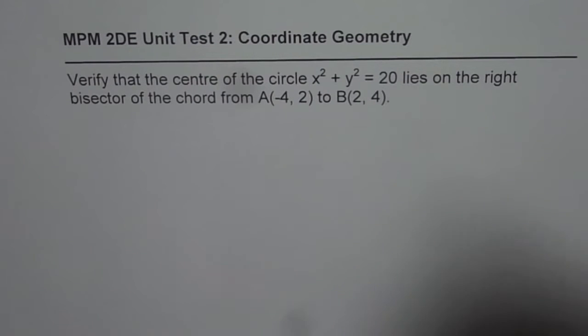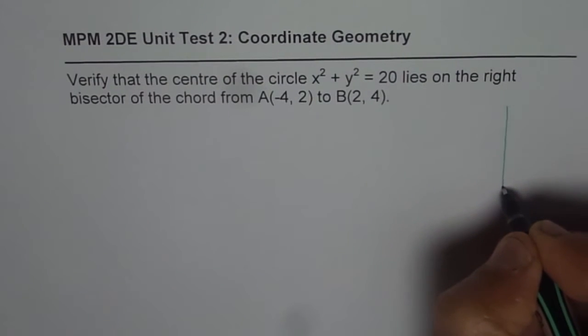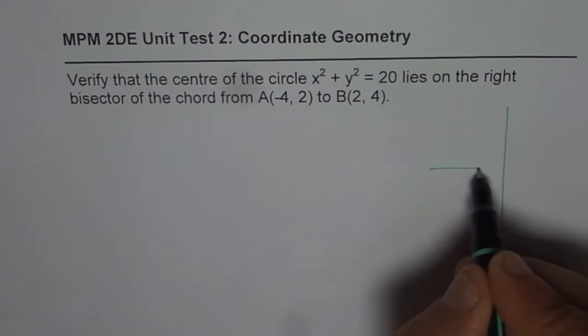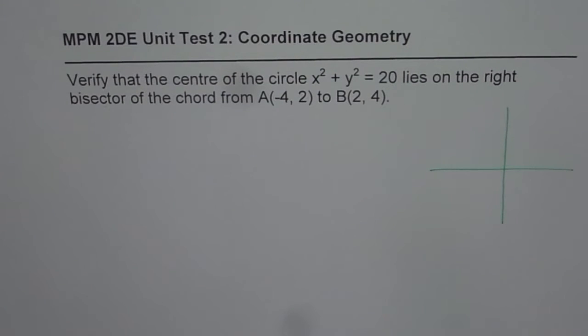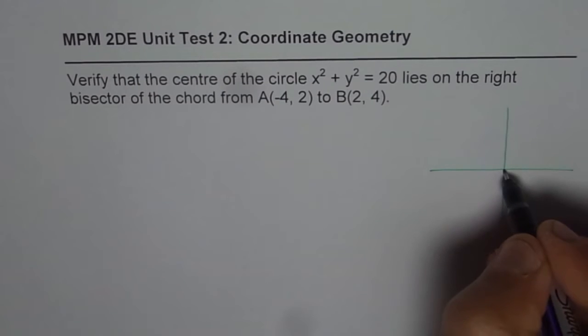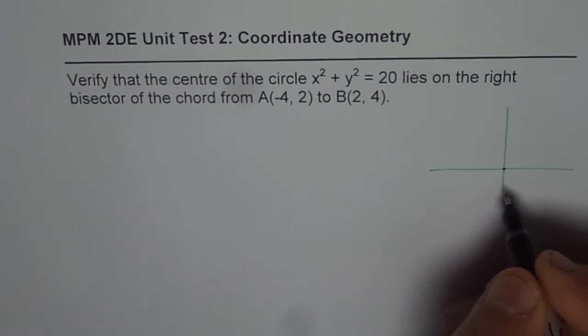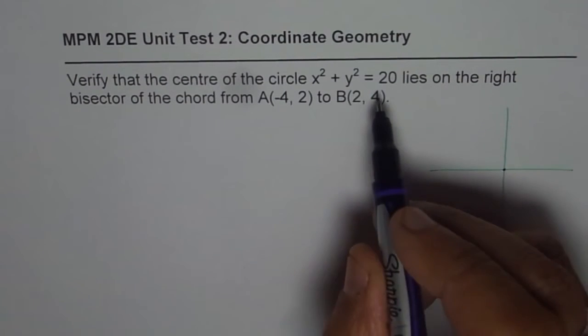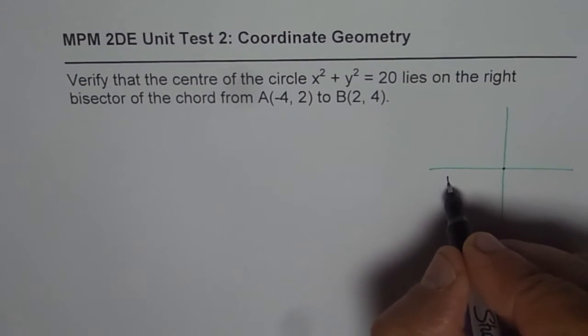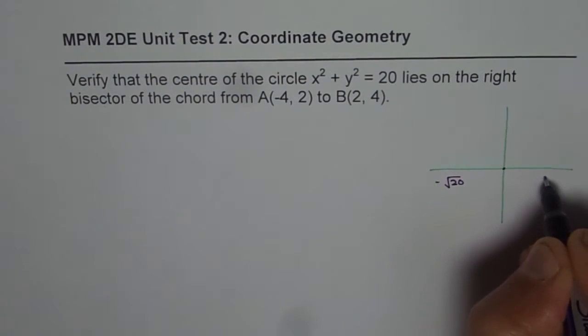Now in this particular question, let us first sketch and see what we are trying to do here. So that's kind of a coordinate plane for us, and let's draw the circle. x² + y² = 20 means the center is the origin for the circle, and the radius is square root of 20. So the radius is square root of 20 on each side.